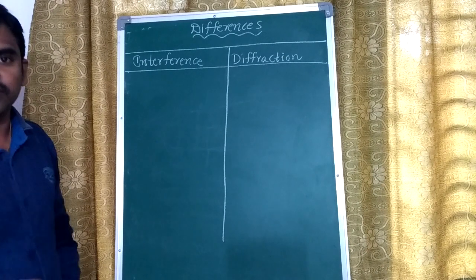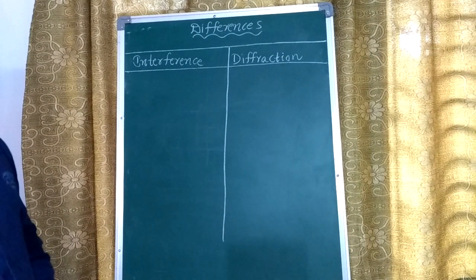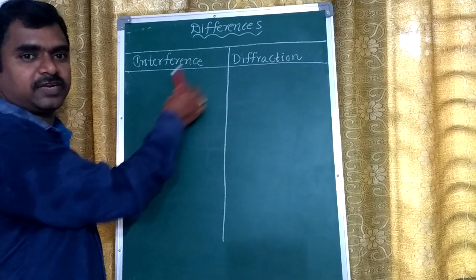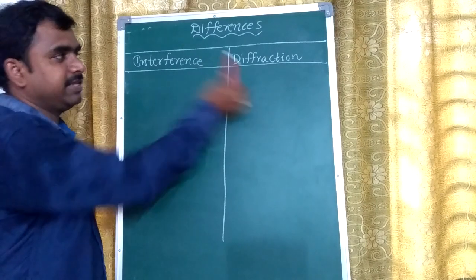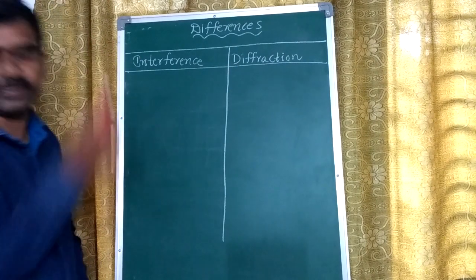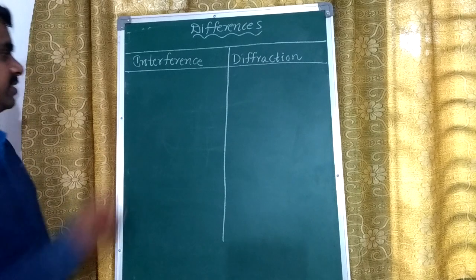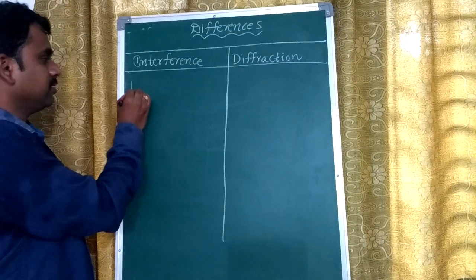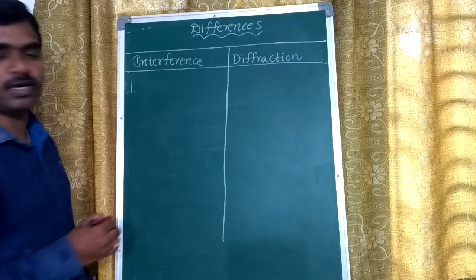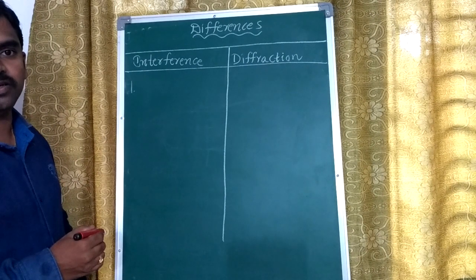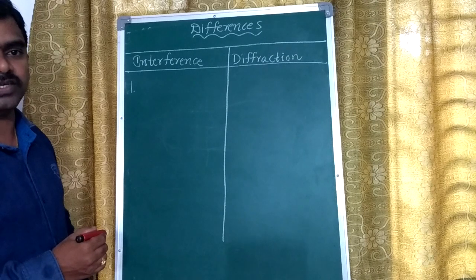In today's class, I would like to explain the difference between interference and diffraction. Interference is due to the superposition of two coherent sources.